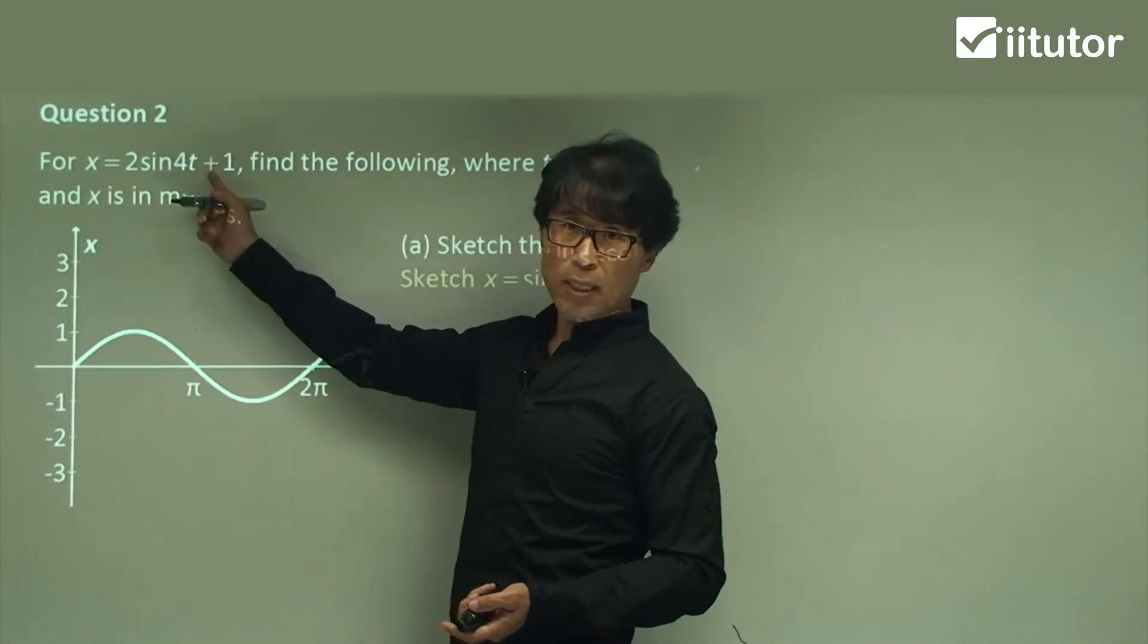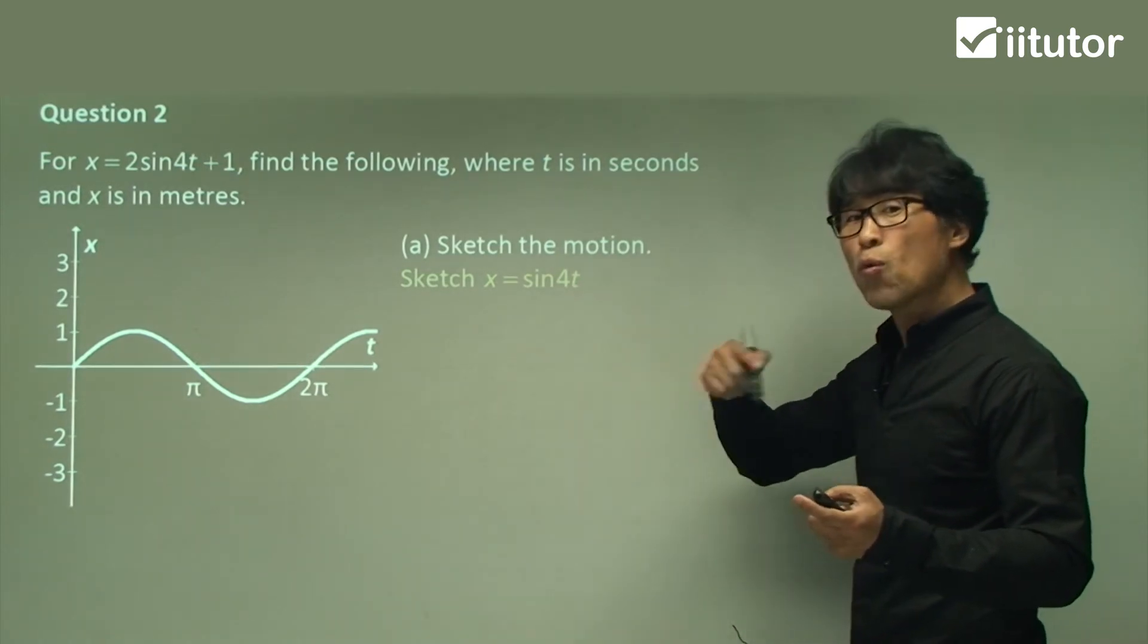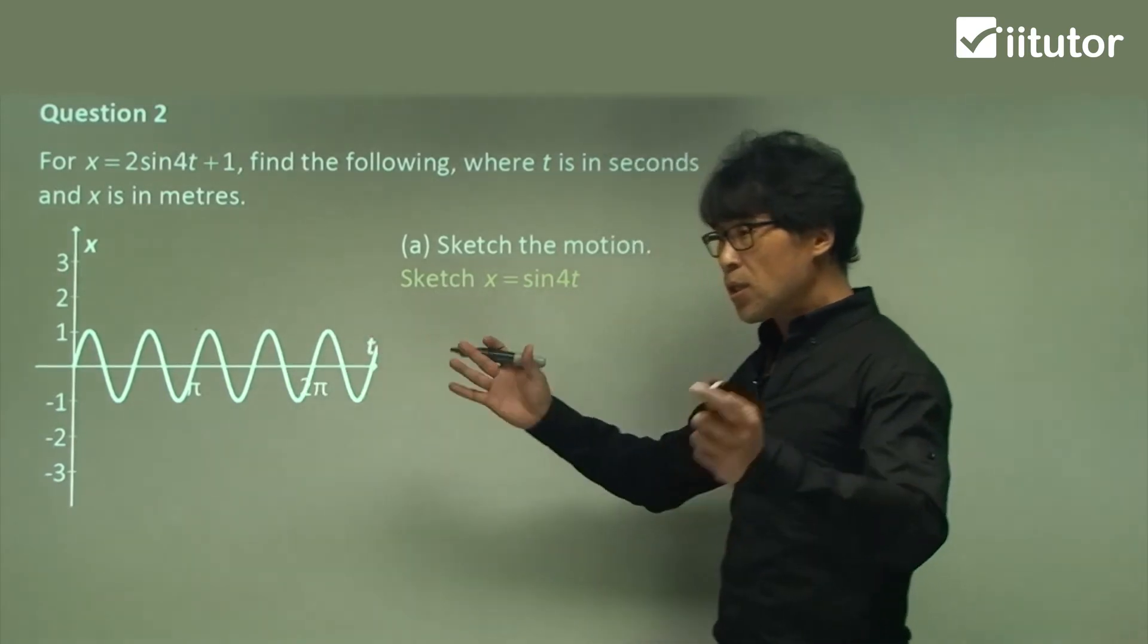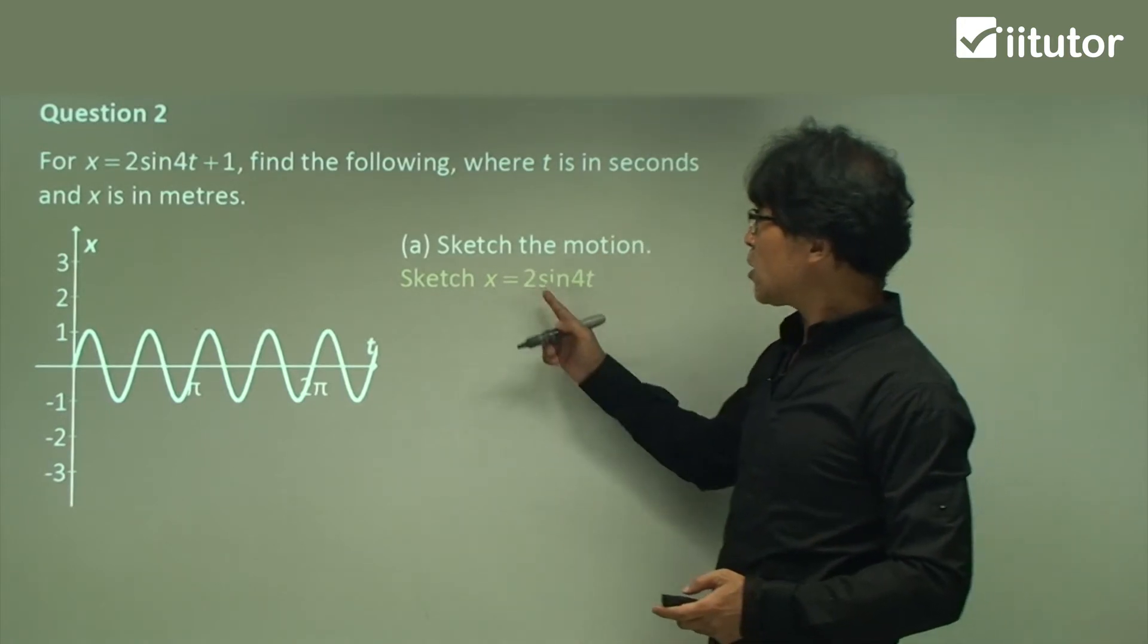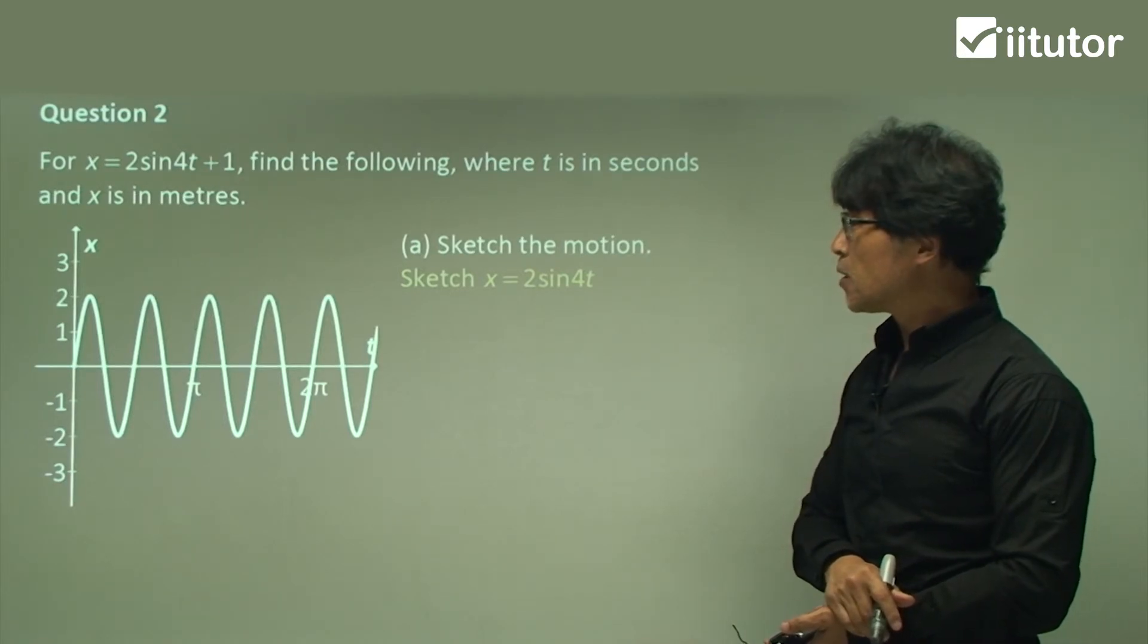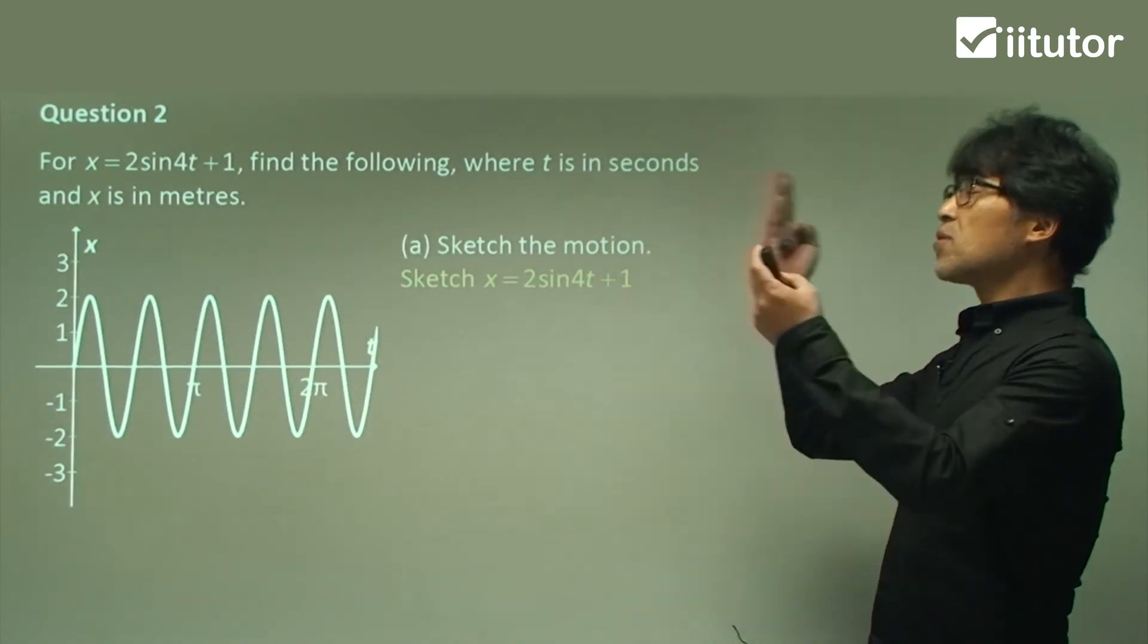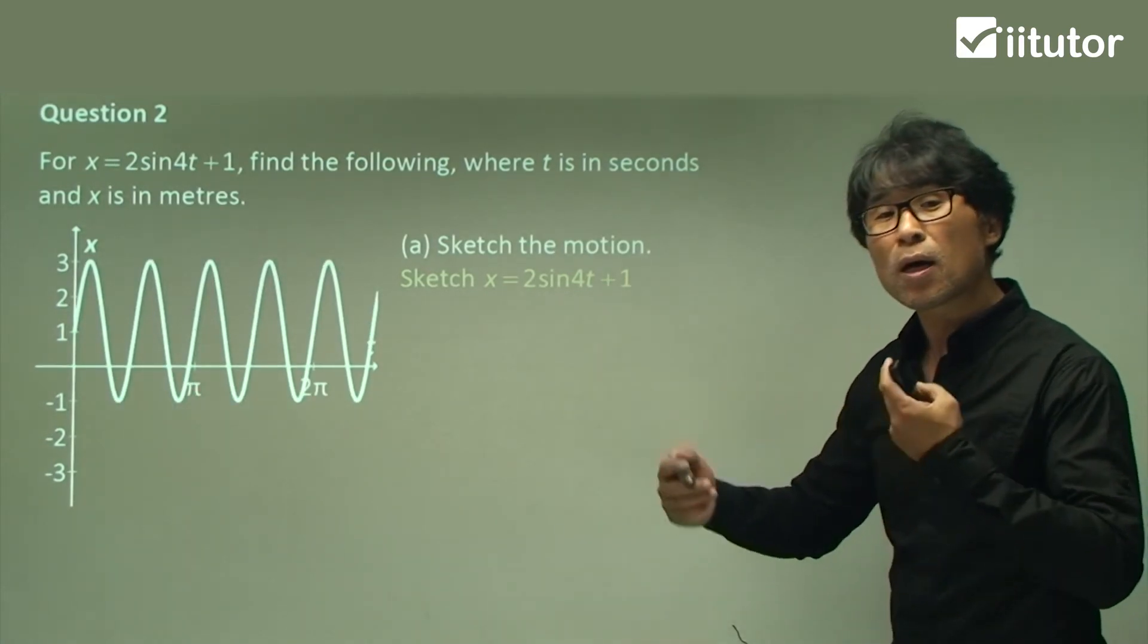How do you sketch sine t? Make sure it should start from zero, from the origin. The range is between 1 and minus 1. Next one is regarding 4t. We can sketch 4t. What does 4t make change? It's squeezed by 4 times, squeezed by 4 times as it used to have before, like a spring. And 2 leads to making the range bigger, the range double. Next one is to consider plus 1. What is plus 1 doing? It lifts the graph upwards. So that's the graph we are working on.